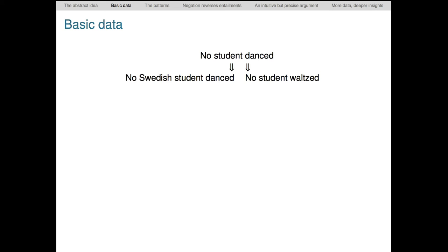And the same holds for the scope. If no student danced, then no student waltzed. So the entailment goes down. But counter examples to the upward direction are easy to imagine. Just think of students doing the tango. They don't affect the truth of no student waltzed, but they falsify no student danced.